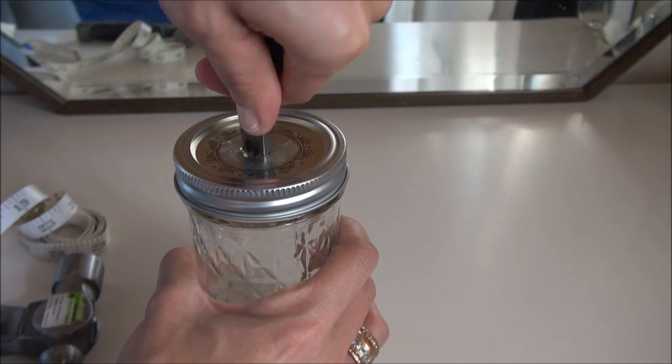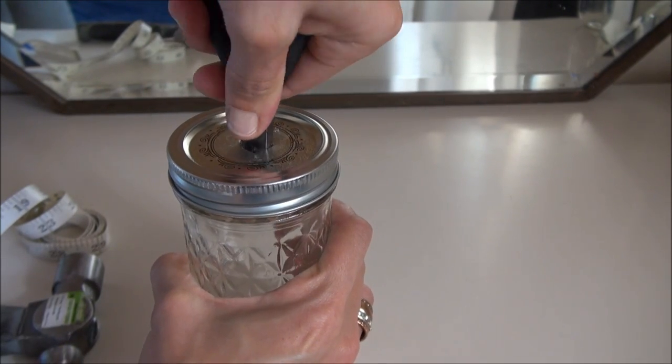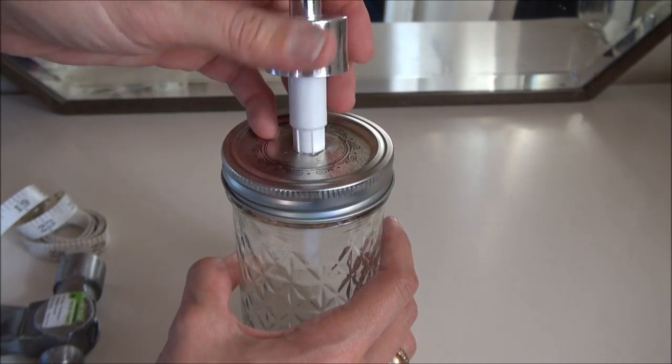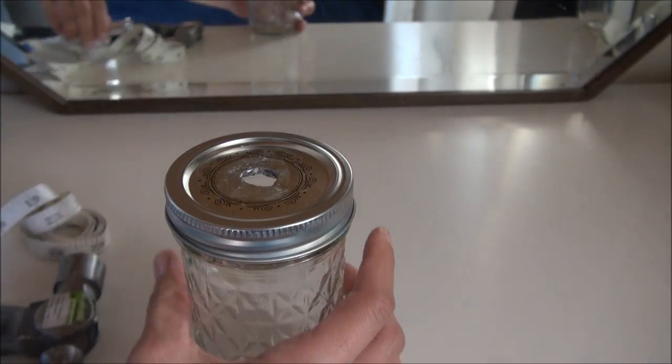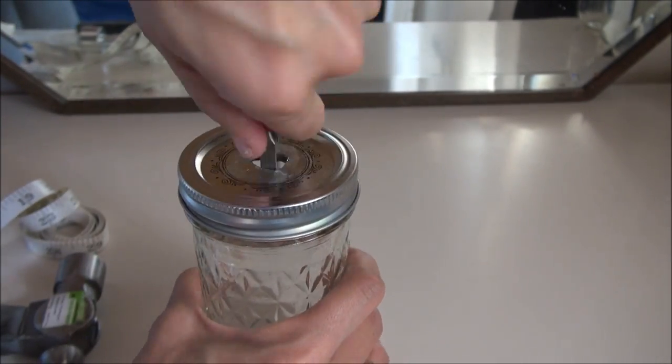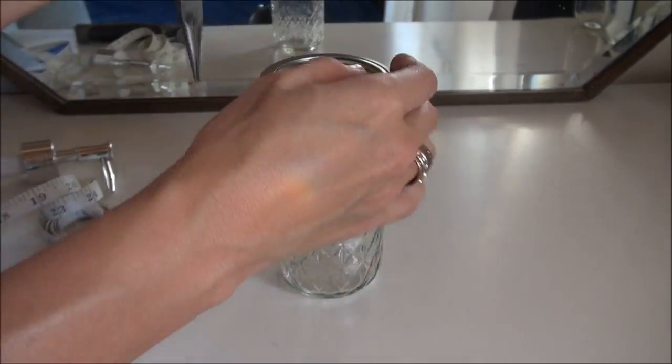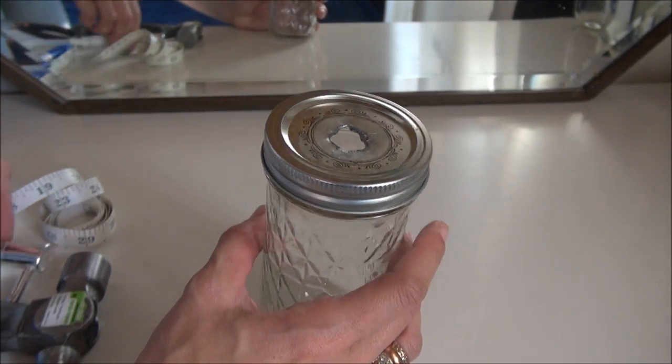Now you just need to make it large enough for the dispenser nozzle to go all the way through. So you can keep on checking. This has to go all the way through this part, so I've got a little bit more to go.